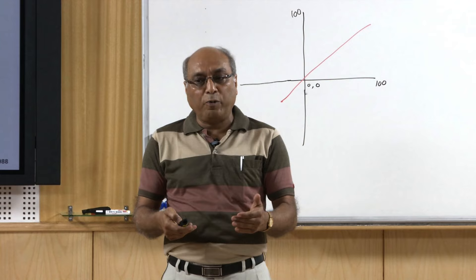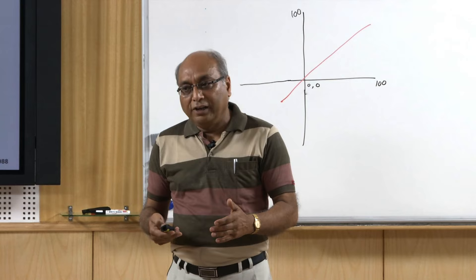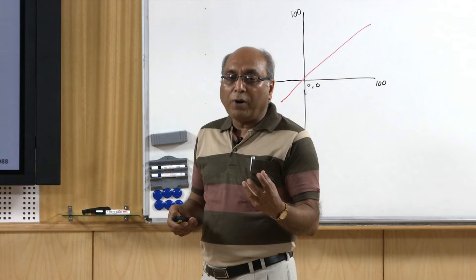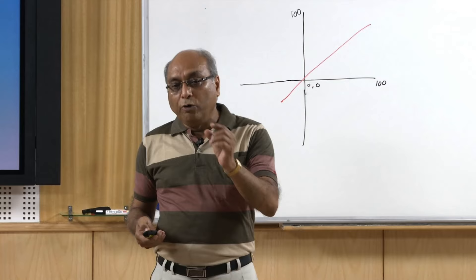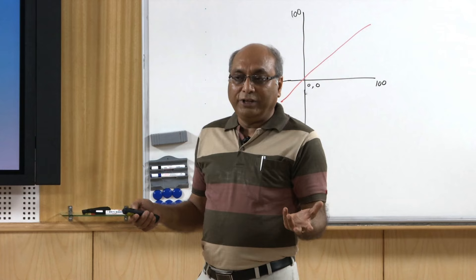You can simulate real scenarios and complex processes of nature within the computer before anything really happens on the ground. That is why GIS has become a very powerful tool for modeling and prediction. Geographic means it relates to places on the earth surface in a geographic coordinate system, and we can answer questions like where something is, because once a location is attached to an object we can answer where it is.